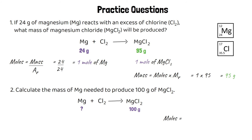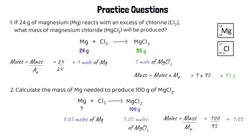For the next question we start with the moles of magnesium chloride because that's the one we know the mass for. Using moles equals mass divided by relative formula mass: the mass is 100 grams and the relative formula mass is 95, giving 1.05 moles. We need to start with 1.05 moles of magnesium. Multiplying 1.05 moles by the relative atomic mass of magnesium (24) gives a mass of 25.2 grams. So to make 100 grams of magnesium chloride, we need 25.2 grams of magnesium.